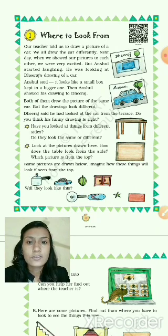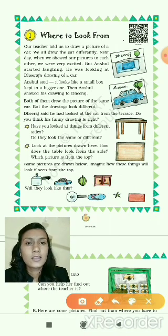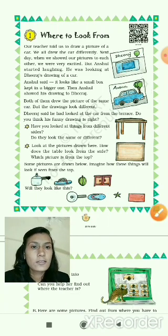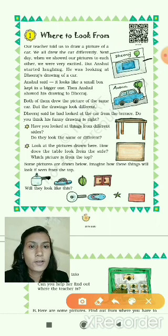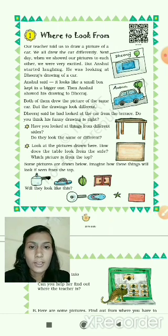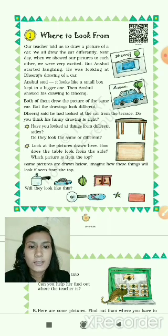Then Anshul showed his drawing to Dheeraj. Now you can see — this is the drawing of Dheeraj's car and this is the drawing of Anshul's car. This is the top view of a car and this is the side view of Anshul's car. Both of them drew the picture of the same car, but the drawings looked different. Dheeraj said he had looked at the car from the terrace. Do you think his funny drawing is right?